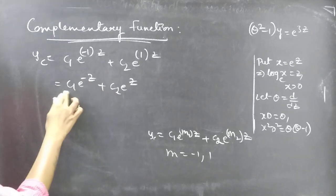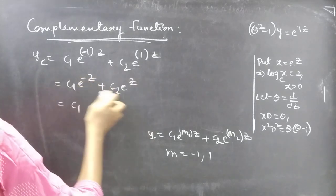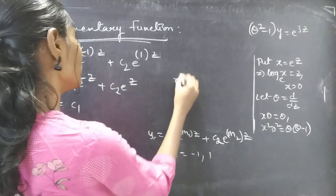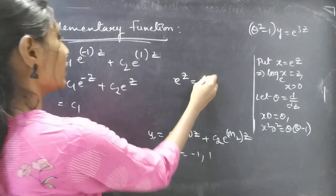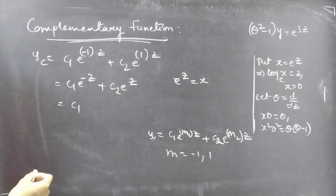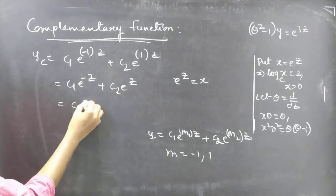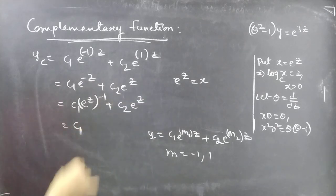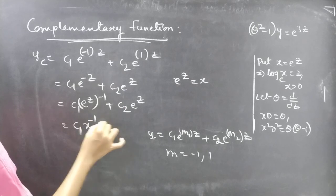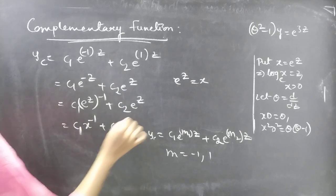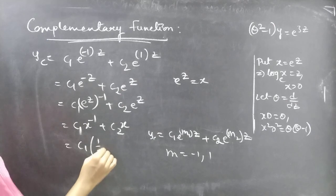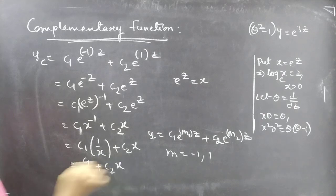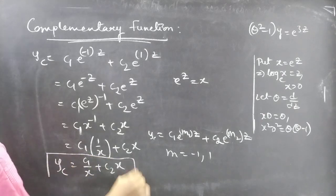Now we need to write yc in terms of x. We will replace eᶻ by x. To do this, write e^(−z) as (eᶻ)^(−1). So yc = c₁(eᶻ)^(−1) + c₂eᶻ = c₁x⁻¹ + c₂x = c₁/x + c₂x. We have found yc; now let's find yp.